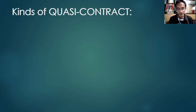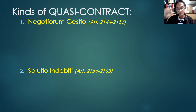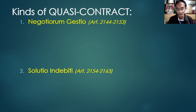Under quasi-contracts, there are actually two kinds: negotiorum gestio and solutio indebiti. For purposes of the board exam, memorize these two classes. Negotiorum gestio is found in Articles 2144 to 2145 of the Civil Code, while solutio indebiti is found under Articles 2154 to 2163.